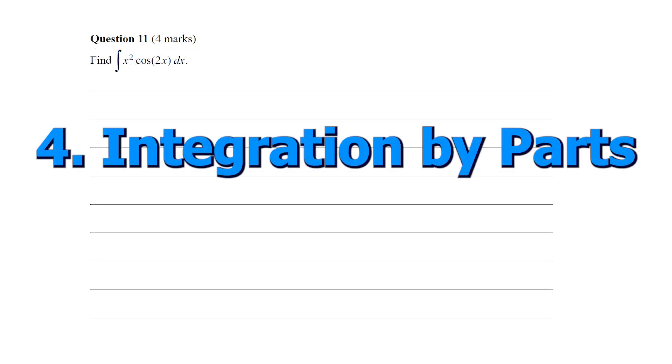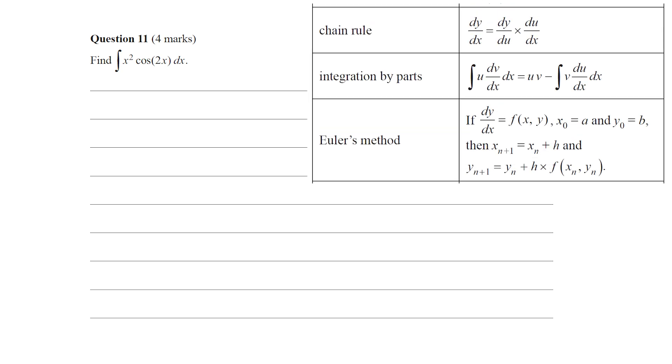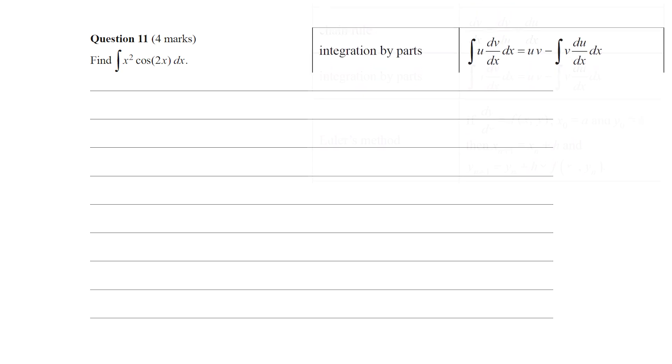On to number four, and this is integration by parts. This is one of the new additions to the calculus area of study, already the biggest area of study, but now even bigger. We're given the formula on a formula sheet. Here's an example, again, this one's from the VCAA samples. We want to identify in this integral which part is going to be u and which one is going to be dv/dx. The dv/dx, of course, we need to be able to integrate, but also we want the u to be simpler when we differentiate it. So it makes sense here to let u be the polynomial, u be x squared and dv/dx be cos 2x.